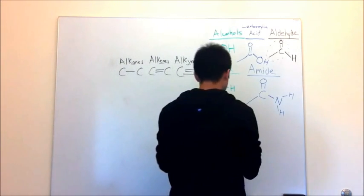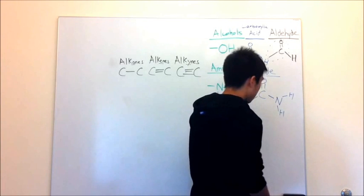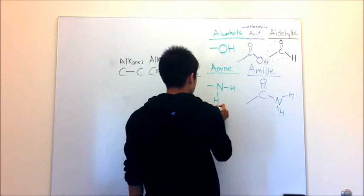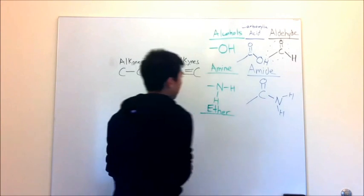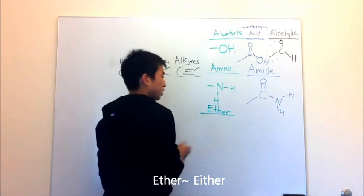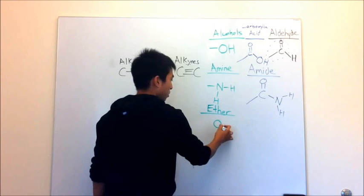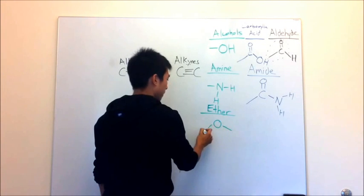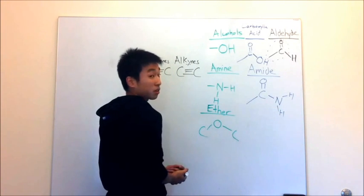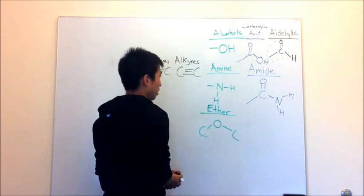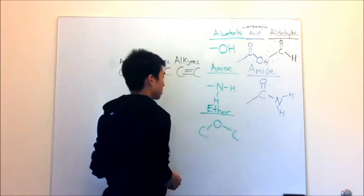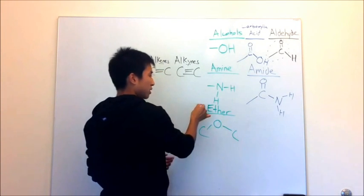Next: ethers and esters. I got these confused my first semester, but then I realized it's not that bad — there are just little tricks to differentiate the two. For ether, when you think of ether, I think of the word 'either.' The structure is basically an oxygen with carbons on either side, and both of those carbons are just a carbon chain. So that's an ether.